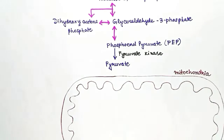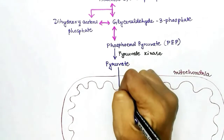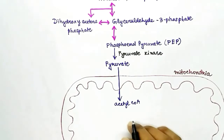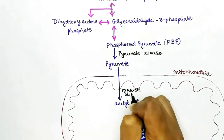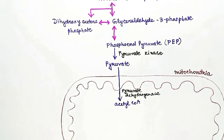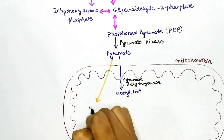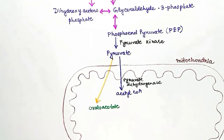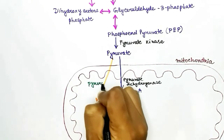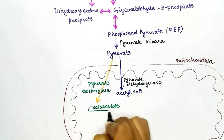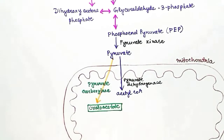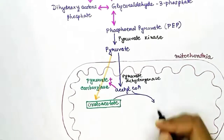After formation of pyruvate, it enters the mitochondria. Inside the mitochondria, pyruvate can either produce acetyl-CoA using the enzyme pyruvate dehydrogenase, or it can produce oxaloacetate using another enzyme called pyruvate carboxylase. Which enzyme is activated depends on the concentration of acetyl-CoA inside the mitochondria. Acetyl-CoA and oxaloacetate can react with each other and enter the Krebs cycle.